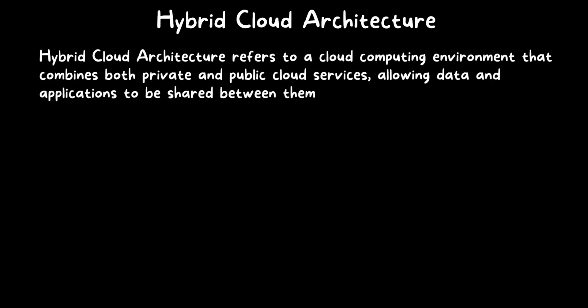Now, what is hybrid cloud architecture? We've discussed on-premise, public cloud, and private cloud. Hybrid cloud architecture refers to a cloud computing environment that combines both private and public cloud services, allowing data and applications to be shared between them. The definition is simple: hybrid cloud means a combination of private cloud and public cloud together. Most organizations today are using this combined architecture. The question is — why does an organization need to use hybrid cloud? Why use both private and public cloud together? Simply, one is not always enough.